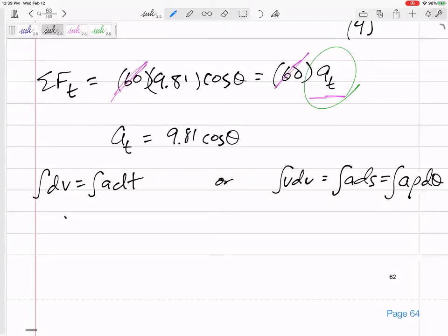All right, so let's do this. Integral V dV equals integral of 9.81 cosine theta rho. So don't forget about this rho. And this rho is just 4. So do you mind if I just multiply 4 times 9.81 cosine theta d theta.